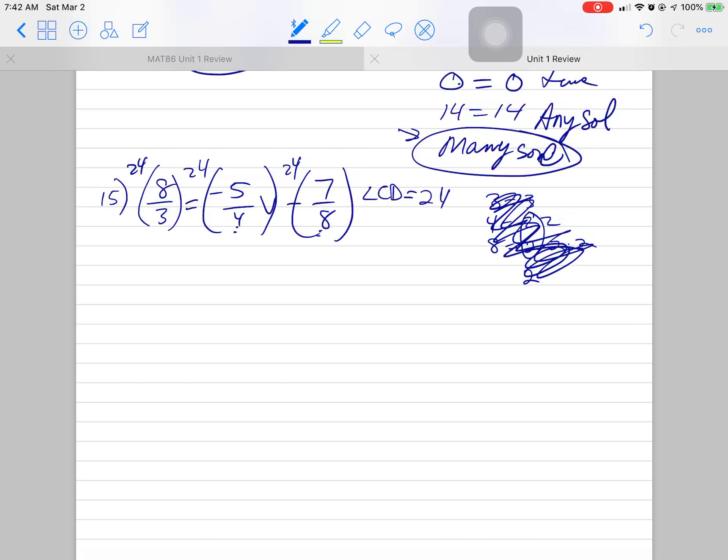Alright, so I like to take the 3 out of the 24 and get the 8. 8 times 8 is 64. If you want to do 8, 24 times 8 divided by 3, you should get 24. This one is 24 times negative 5 divided by 4, which is negative 30.